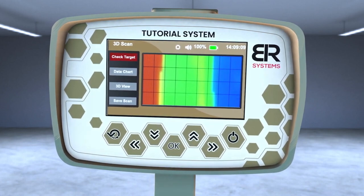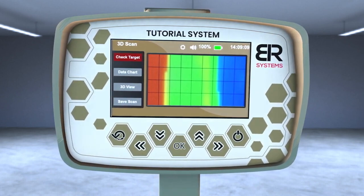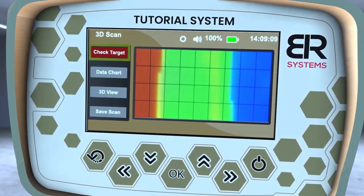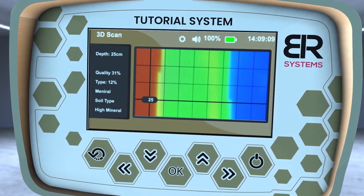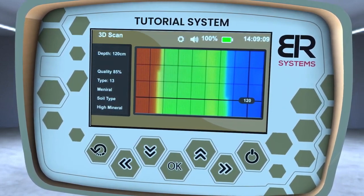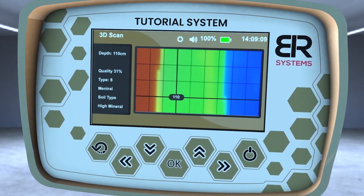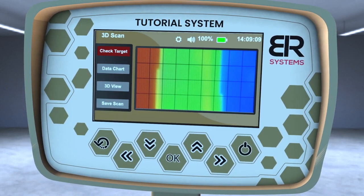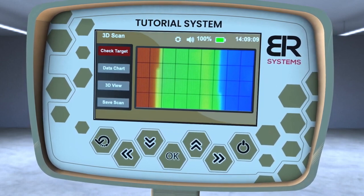Next to the image, there are analytical icons for the scan result, which are check target icon. Click on check target in order to see the details of the image. Using the arrows you can switch between the positions of the image. Press OK to identify the soil type to get the exact target depth and scanning parameters.